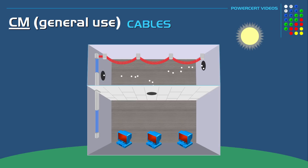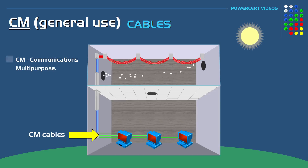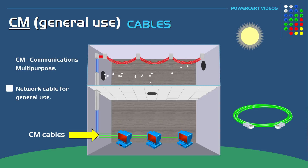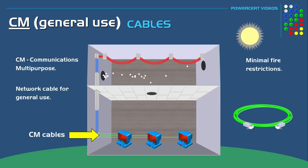Finally, there are PVC-CM cables. CM, or Communications Multipurpose, is a network cable for general use. These cables have minimal fire restrictions and are the cable you would use to connect your computer or network device into a wall jack to access a network. These are the cheapest of the three cables.